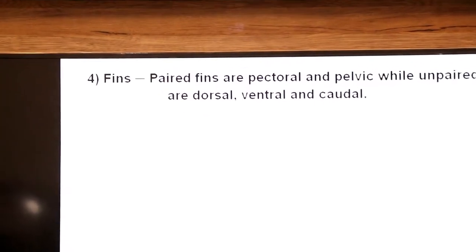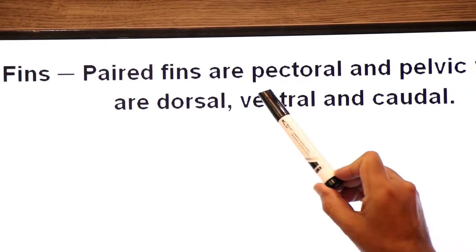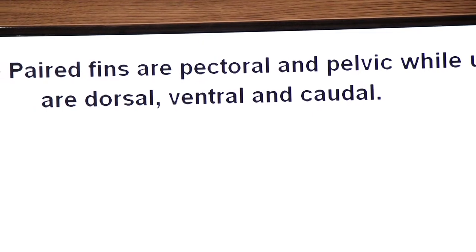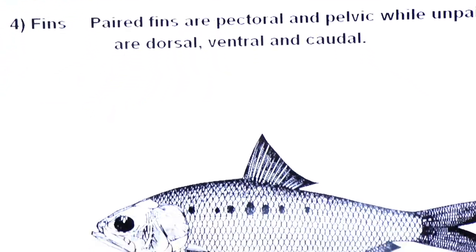Now fins. Dear students, in these paired fins are also found, and unpaired fins also. Paired fins are pectoral and pelvic, while the unpaired fins are dorsal, ventral and caudal. Now we will make this clear on the diagram.